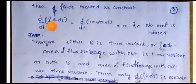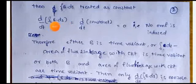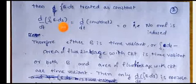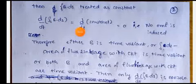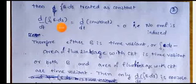For this term to be non-zero, either the magnetic flux density B must be time-variant, or the area of flux linkage with the circuit must be time-variant, or both B and the area of flux linkage with the circuit are time-variant. Only then does the differentiation of this term become non-zero, and only then is EMF induced.